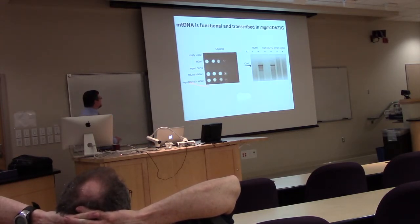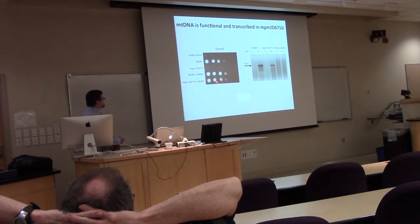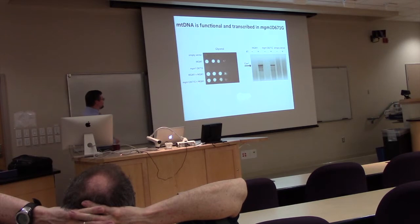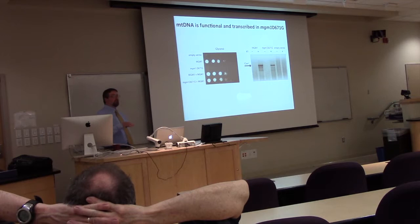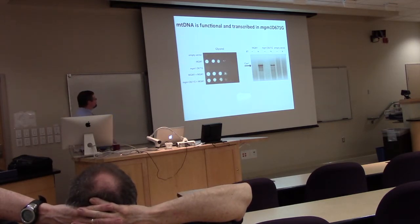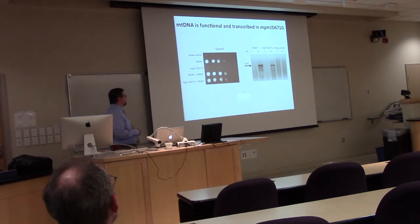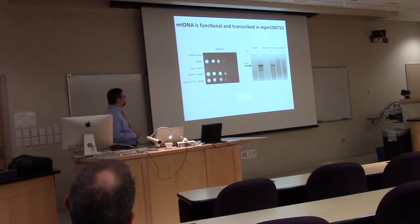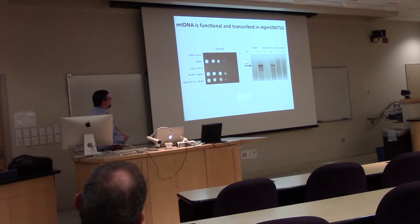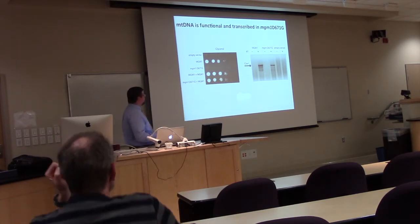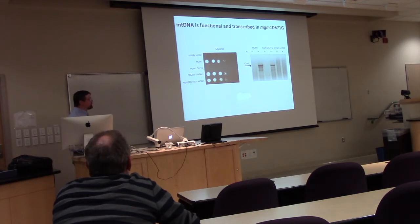First, we took this mutation — after it could no longer respire — and added back a wild-type copy of MGM1. We could regain the ability of these cells to grow on a non-fermentable carbon source, restoring respiration. This suggests the mitochondrial DNA present is functional once wild-type MGM1 is restored. Also, by reverse transcription assay we see COX-1 — part of one of the respiratory complexes — is being transcribed in both wild-type and the mutant, but not in delta MGM1 which has lost nucleoids. So mitochondrial DNA in these cells is functional and actively transcribed.